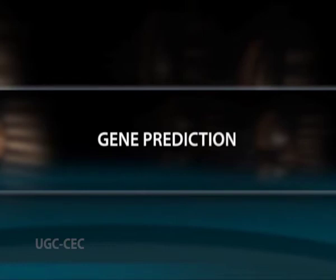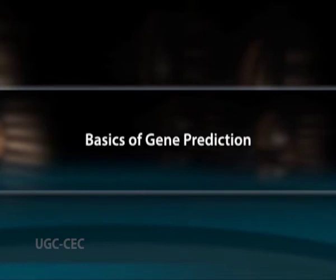Welcome friends to a new session on genomics and proteomics. In this session we will discuss gene prediction. In computational biology, gene finding or gene prediction refers to the process of identifying the regions of genomic DNA that encode genes. This includes protein coding genes as well as RNA genes, but may also include prediction of other functional elements.